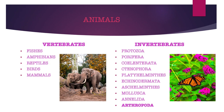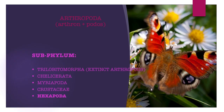Vertebrates are animals with a backbone, so all fishes, amphibians, reptiles, apes and mammals are vertebrates. On the other hand, invertebrates are animals without a backbone. Their phyla include Protozoa, Porifera, Coelenterata, Ctenophora, Platyhelminthes, Echinodermata, Aschelminthes, Mollusca, Annelida, and Arthropoda. Among all these phyla of invertebrates, phylum Arthropoda makes up about 85 percent of all living animals.